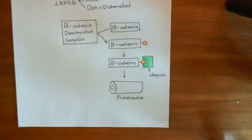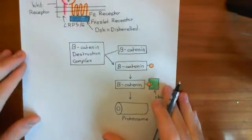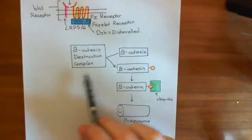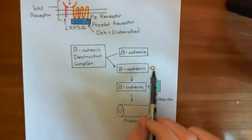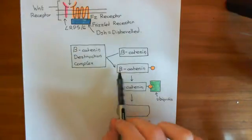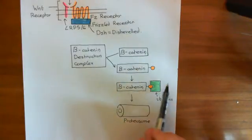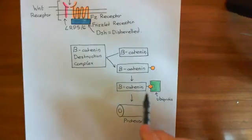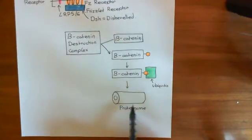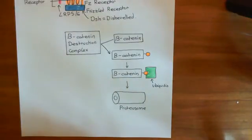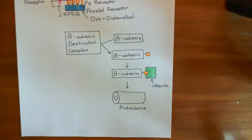Welcome to this second video on the Wnt/beta-catenin pathway. We have seen that the activity of the beta-catenin destruction complex is to add a functional group onto beta-catenin, which allows ubiquitin to be bound onto it — i.e., it allows beta-catenin to be ubiquitinated. Once ubiquitinated, it becomes a target for the proteasome and is broken into pieces. So the beta-catenin destruction complex is responsible for keeping beta-catenin levels in the cytoplasm low.